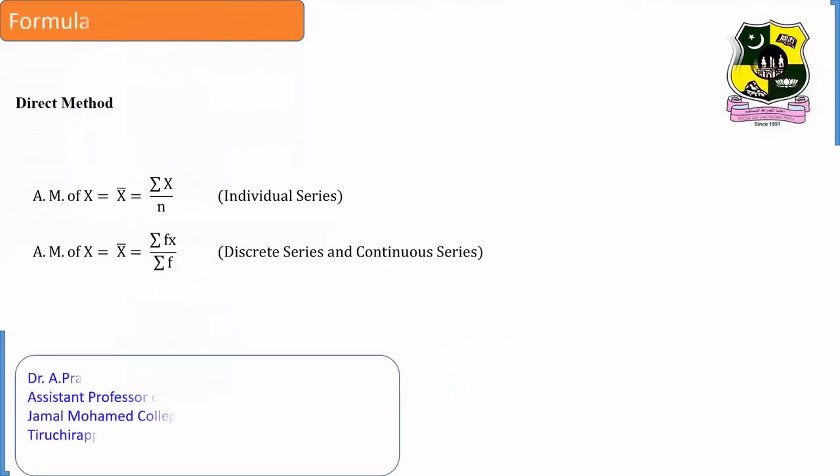Here, we see the formulas to calculate arithmetic mean under direct method. As mentioned above here, all the terms are added and then divided by the number of terms.